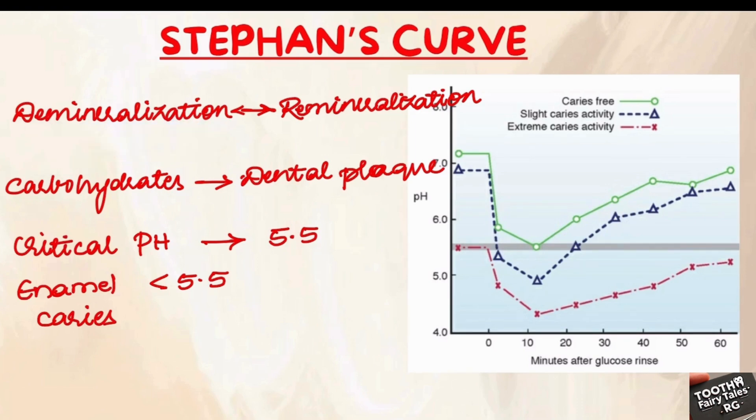Let's talk about the critical pH threshold. The key point to remember here is the critical pH is 5.5. When the pH in the oral cavity drops below 5.5, the enamel of our teeth starts to demineralize. In other words, the minerals which are present in the enamel, which are keeping our teeth strong, they begin to dissolve.